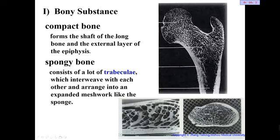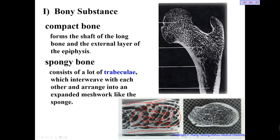Compact bone forms the shaft of the long bone and the external layer of the epiphysis. You can see the external layer is compact bone. In the middle, the structure is very loose and net-like — this is spongy bone, which resembles a sponge. On X-ray, you can see the compact bone on the outside and the network structure of spongy bone in the middle.